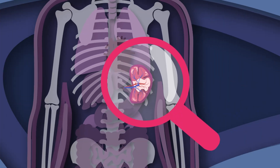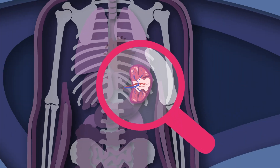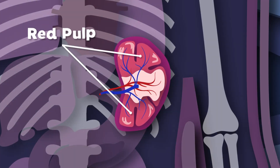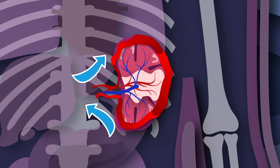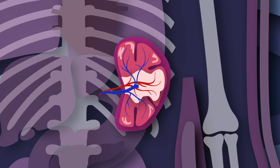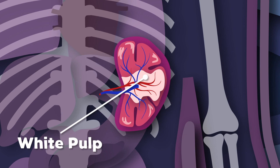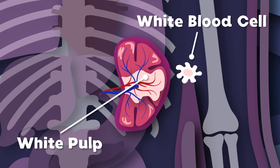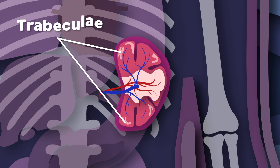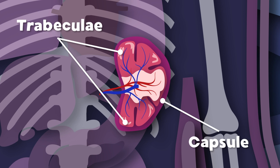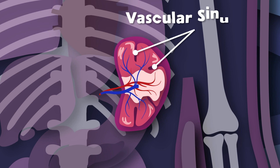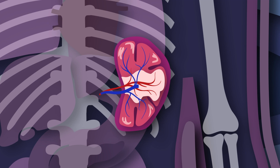Let's take a look inside the spleen to learn more of its parts. There are two main types of tissue: the first is called the red pulp — it filters blood of antigens, microorganisms, and defective red blood cells. The second is called white pulp, part of the immune system, mainly made up of white blood cells. The trabeculae of the spleen is the framework within, attached to the capsule that surrounds the spleen. Vascular sinusoids are small vessels that drain into larger veins.